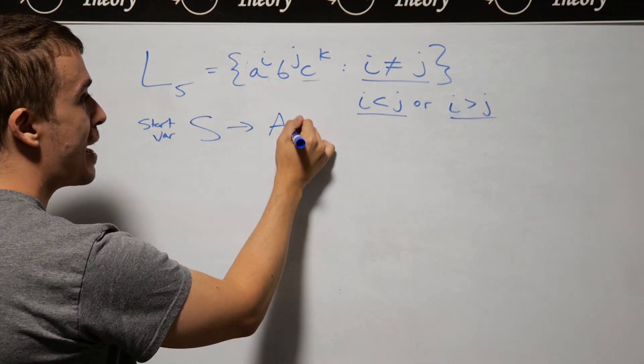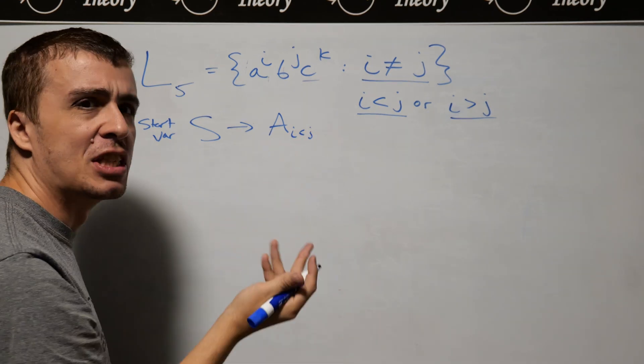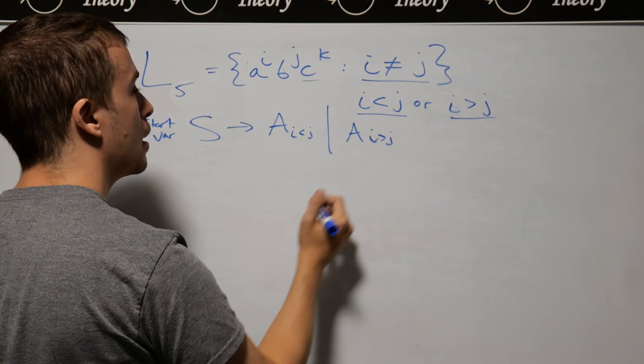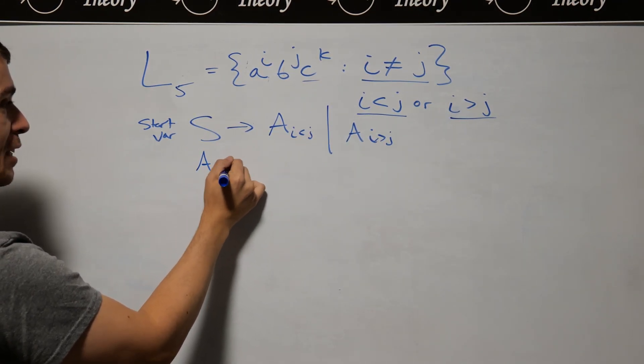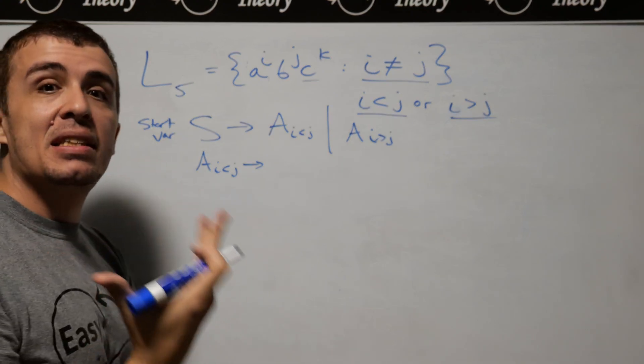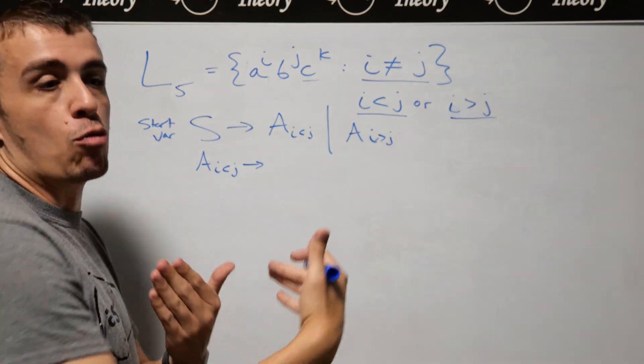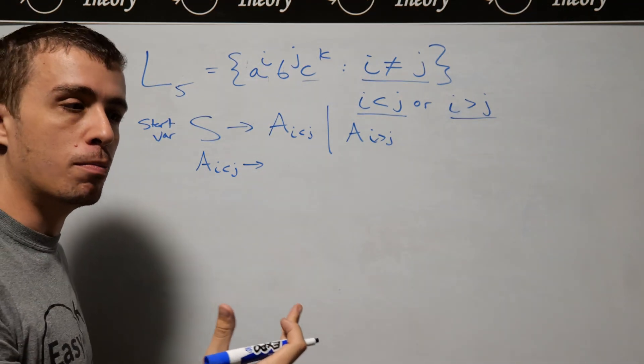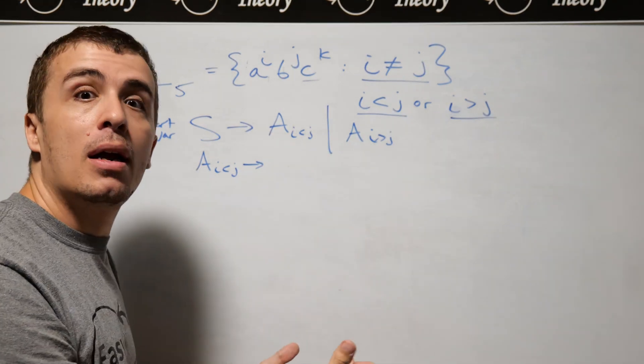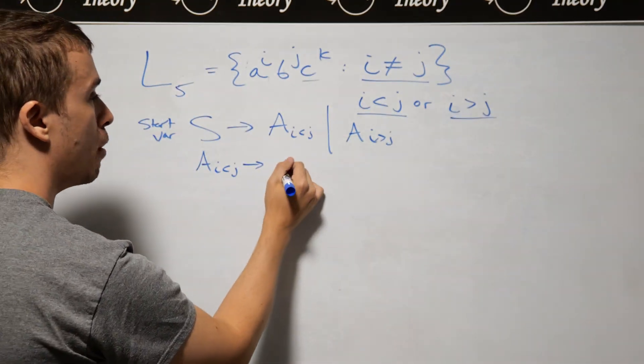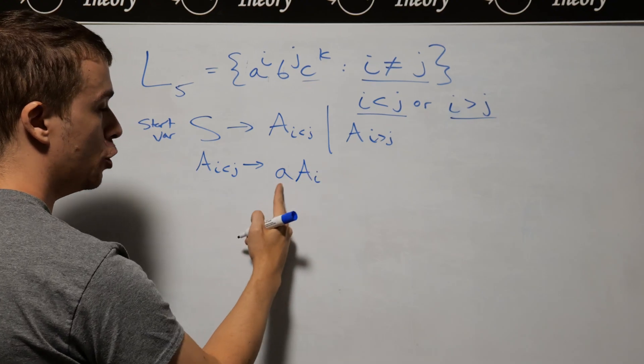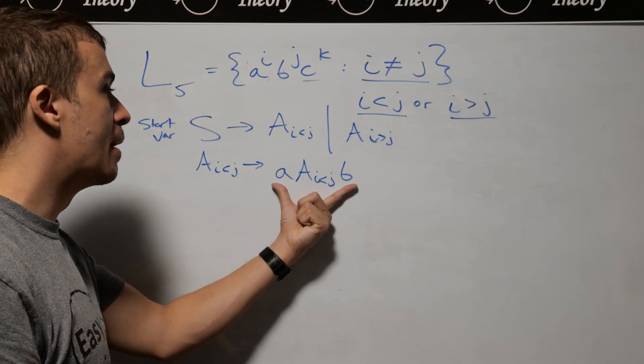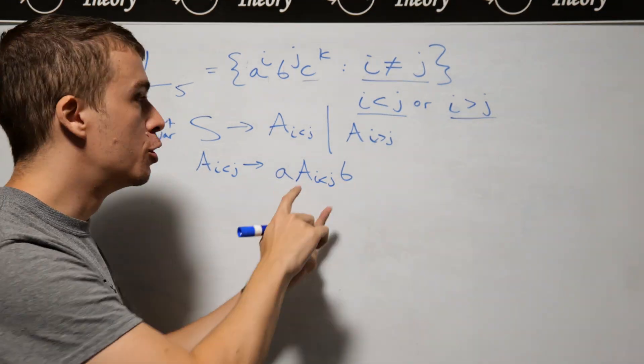I'll have two variables: A_{i<j} and A_{i>j}. Let's deal with the i < j case. That means the number of A's is less than the number of B's, but the B's could be only one more or way more than the A's. What I'm going to do is allow us to make A's and B's in equal number, then later make as many more B's as needed. I'll generate one A, recursively go into this same variable with a B, so I'm generating them in equal number - one A for every B.